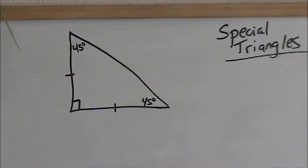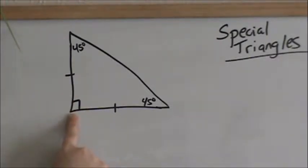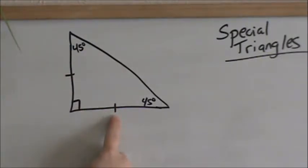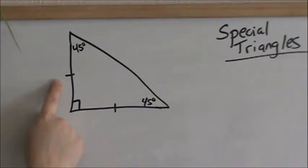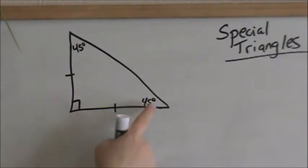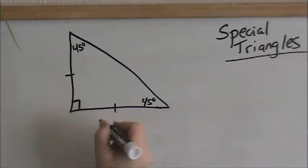We're going to be doing special triangles, and the triangle we're going to look at right now is a 45-45-90 triangle. Remember the degrees in a triangle have to add up to 180 degrees. Here's our right angle of 90 and then the other ones are 45-45. When these angles are the same, that means that these legs on each side of the right angle are going to be the same. What kind of triangle is this when both legs are the same? Isosceles. When you have a 45-45-90 triangle, you know that these legs are the same because it's an isosceles triangle.